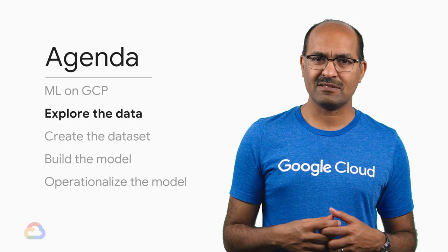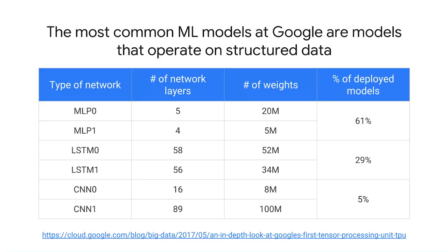You are probably doing this specialization because you saw images, sequences, and recommendation models all listed in the set of courses. However, all five courses in the first specialization were all on structured data. Why? Even though image models and text models get all the press, even at Google, most of our machine learning models operate on structured data.